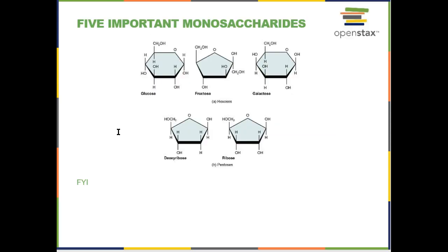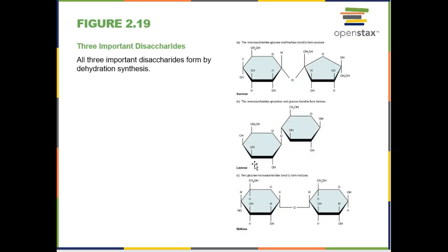There are other monosaccharides, but glucose is really the only one we care about. There's fructose, as in high fructose corn syrup — it's still a sugar, it's sweet. And then deoxyribose and ribose, which we're going to see in our DNA and RNA — deoxyribonucleic acid and ribonucleic acid.